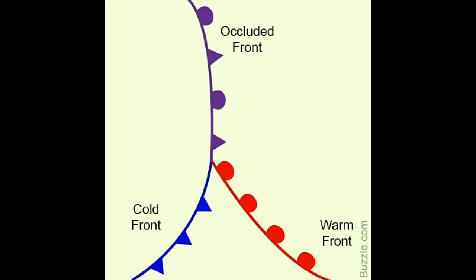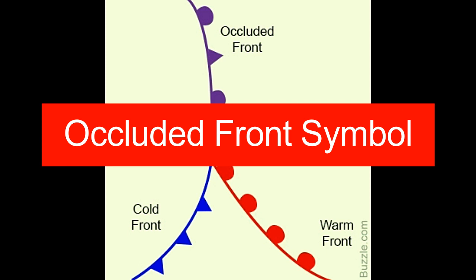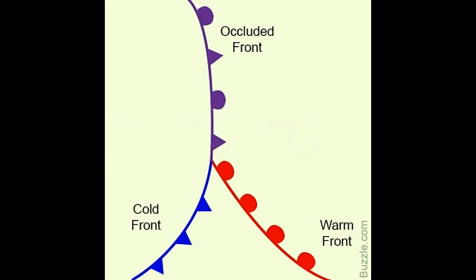The symbol of an occluded front is as shown in the image below. It is represented by a solid line that has scallops, or semi-circles, followed by triangles facing in the direction of the air mass that is less cold. The motion of this front is in the direction in which these scallops and triangles are facing. The presence of these scallops and triangles is alternate. In case of colored diagrams, an occluded front is represented by a solid purple line.